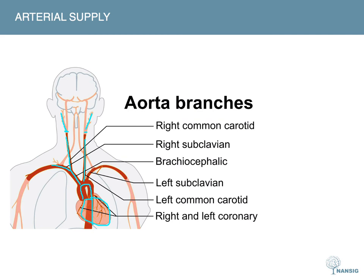The intracranial structures are mainly supplied by the internal carotid arteries. Also relevant are the vertebral arteries — the right vertebral artery comes off the right subclavian, and the left vertebral artery comes off the left subclavian. They supply blood into the brain as well, and we'll look at these in more detail on the next slide.